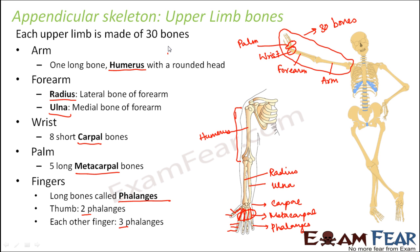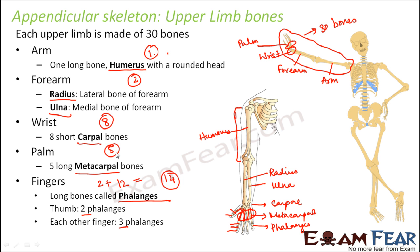So total bones in one hand: arm has one, forearm has two, wrist has eight, palm has five, and fingers have fourteen total — the thumb has two phalanges and the four other fingers have three phalanges each, giving four times three equals twelve, plus two equals fourteen. Adding them all up: one plus two plus eight plus five plus fourteen equals a total of 30. These 30 bones constitute each upper limb.